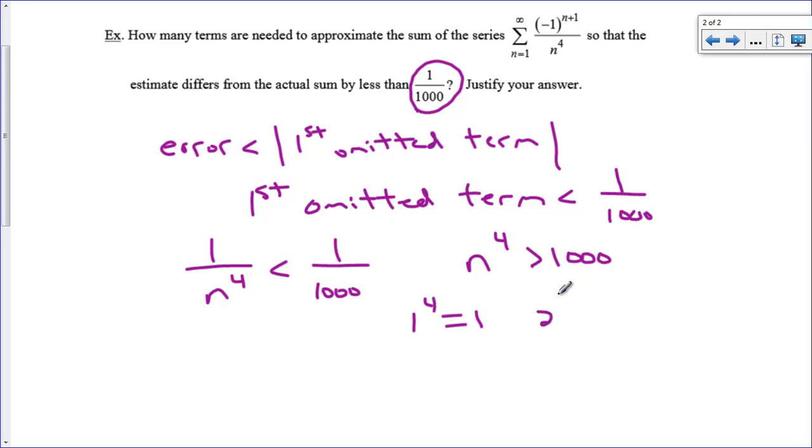One to the fourth is one. Not big enough. Two to the fourth is sixteen. Three to the fourth is eighty-one. Four to the fourth is two fifty-six. We're getting there. Five to the fourth is six twenty-five. Finally, six to the fourth is one thousand two hundred ninety-six. The first omitted term we need is the sixth term.